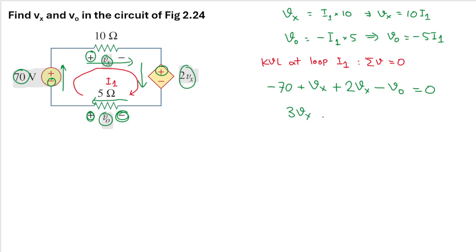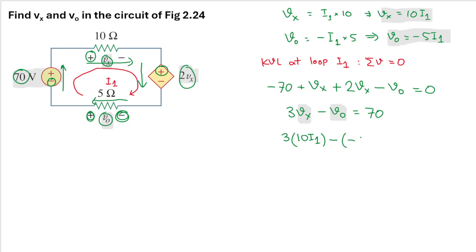Simplifying the equation: Vx plus 2Vx gives 3Vx, minus V0, and moving the minus 70 to the right-hand side gives 70. Substituting Vx equals 10·i1 and V0 equals minus 5·i1, we get 3 times 10·i1 minus (minus 5·i1) equals 70, which gives 30·i1 plus 5·i1 equals 70.